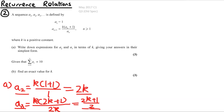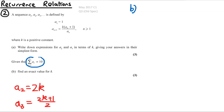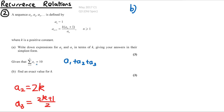Then a3 is found by substituting a2 = 2k: a3 = k(2k + 1/(2k)). Simplifying, the k's cancel in the fraction to give a3 = k × (2k + 1)/(2k) = (2k + 1)/2. So a3 = (2k + 1)/2.